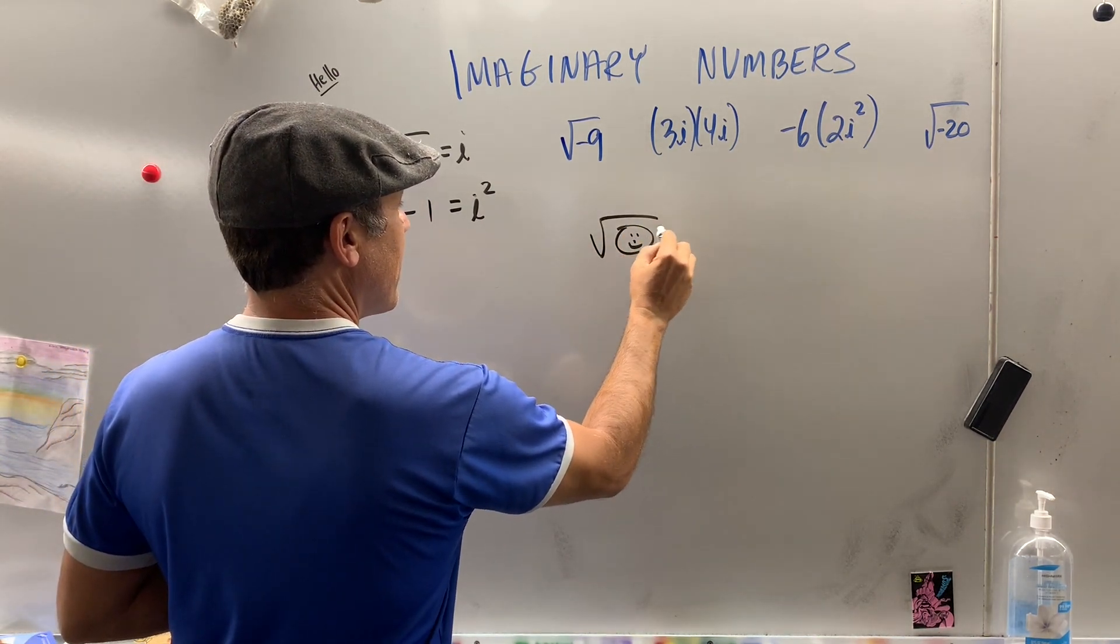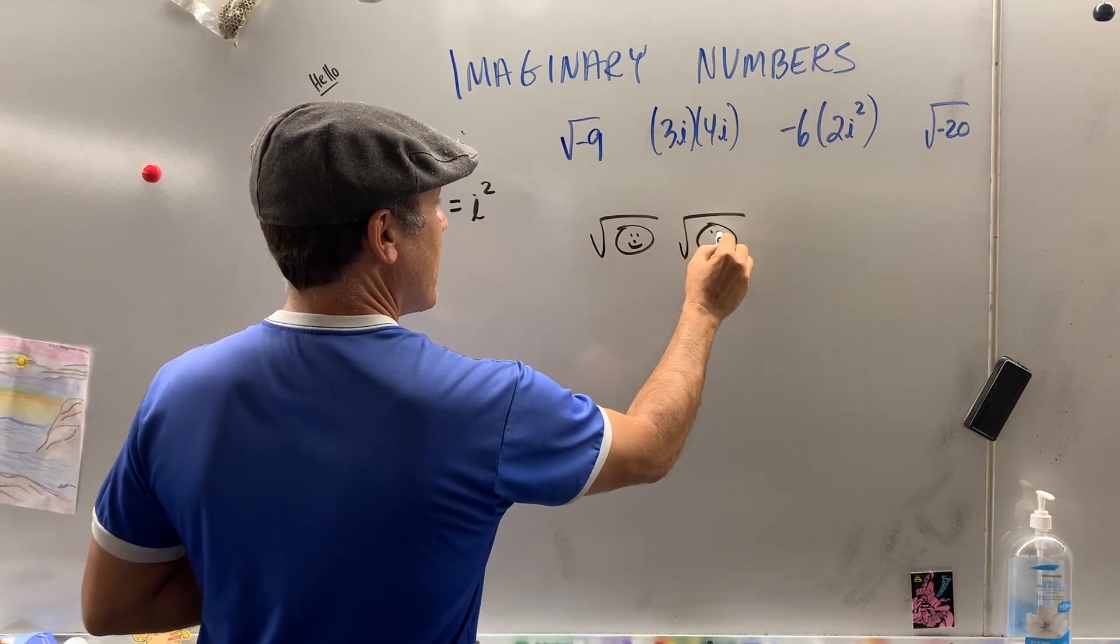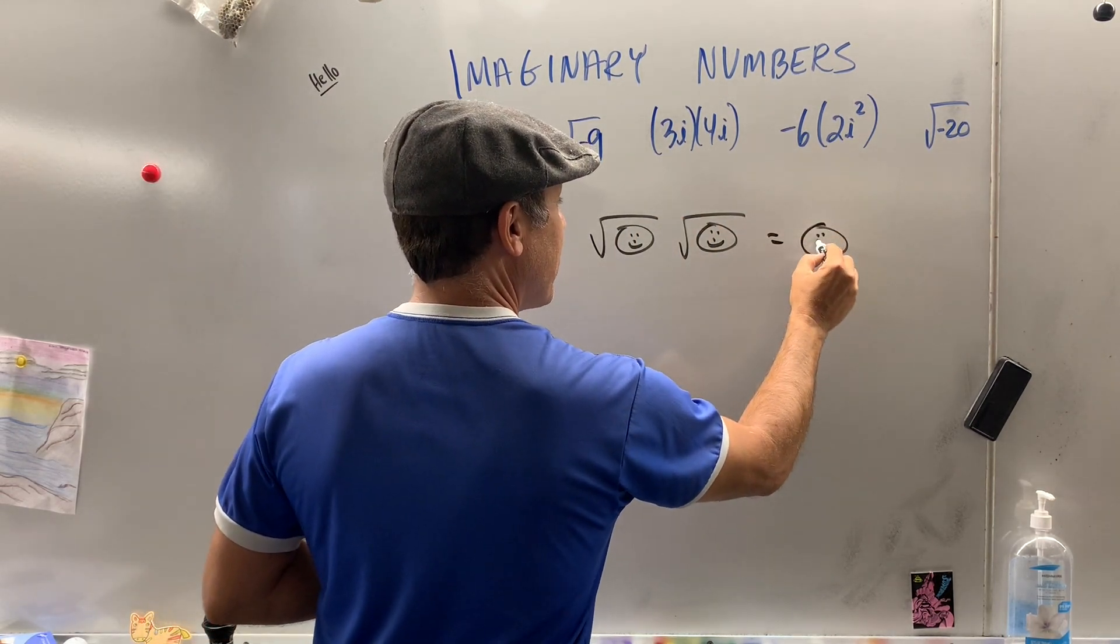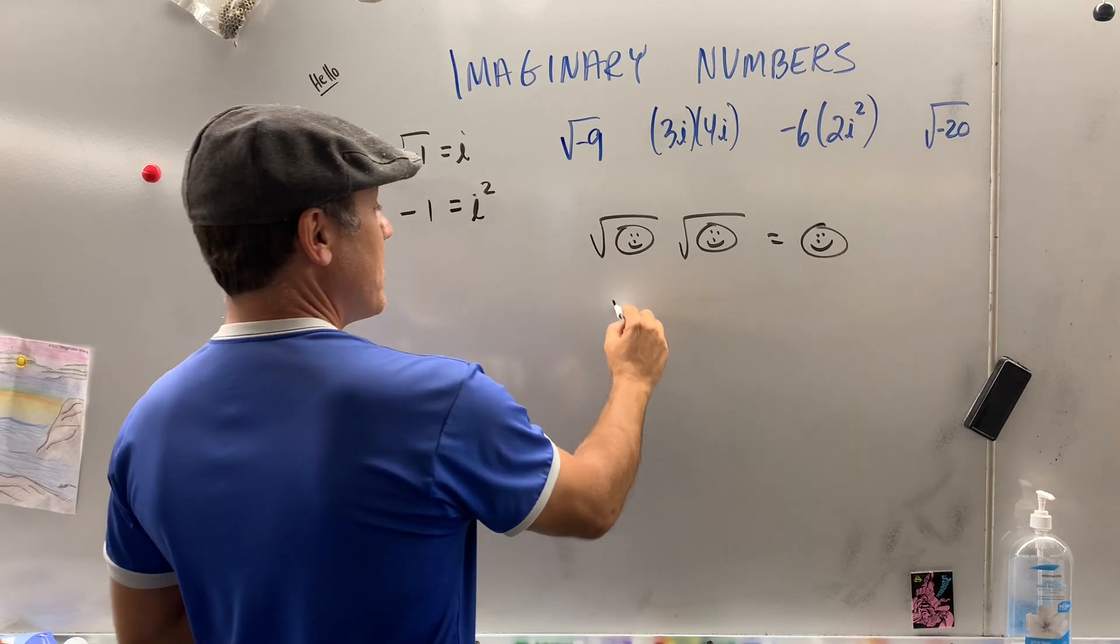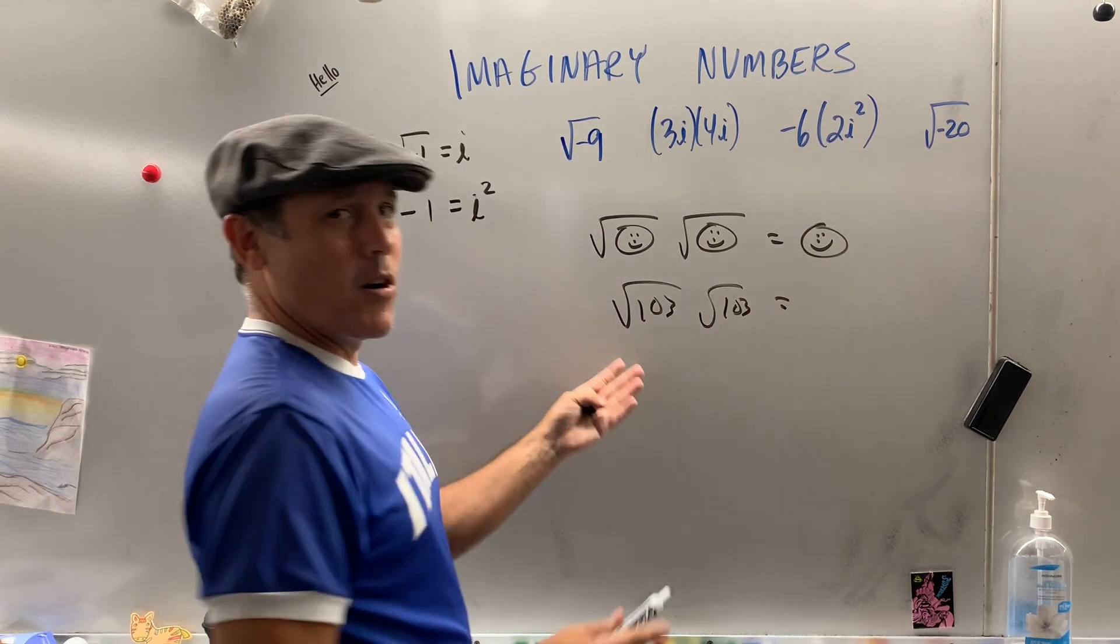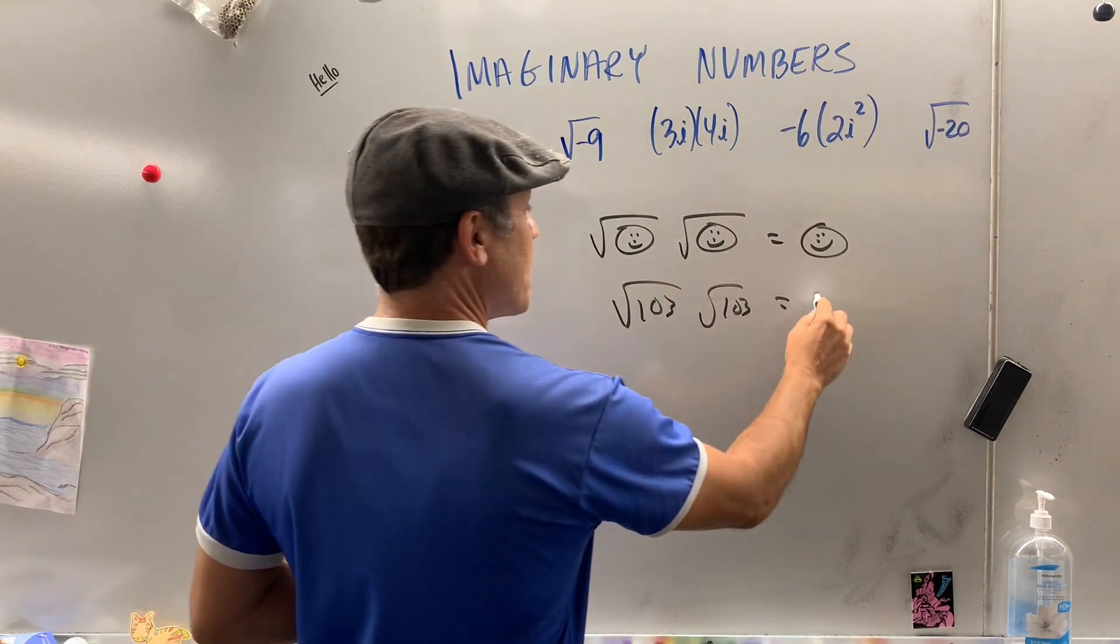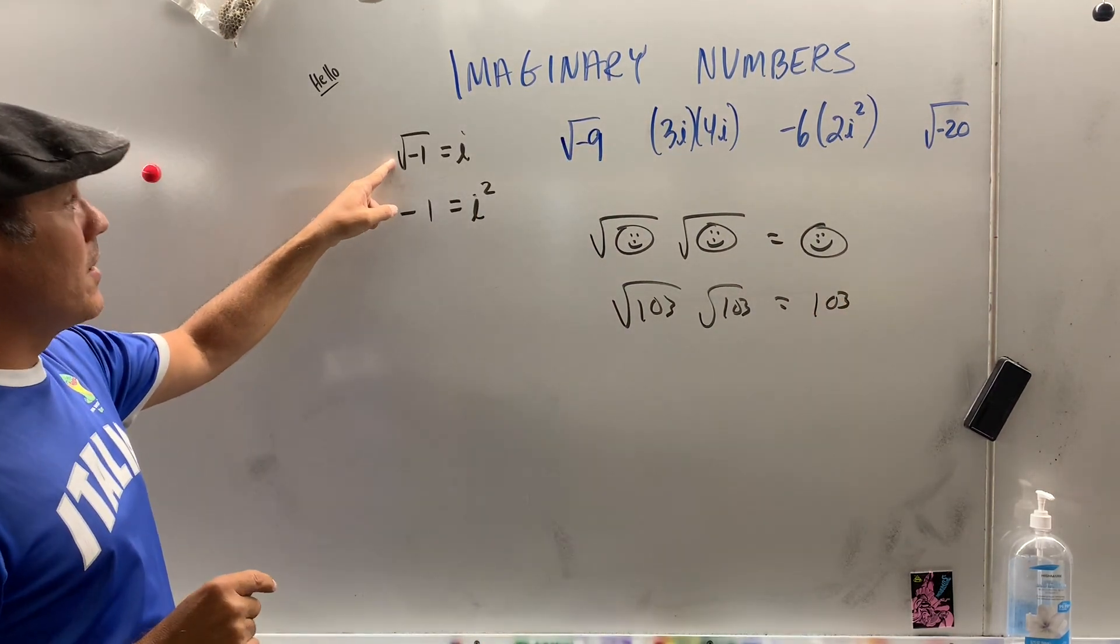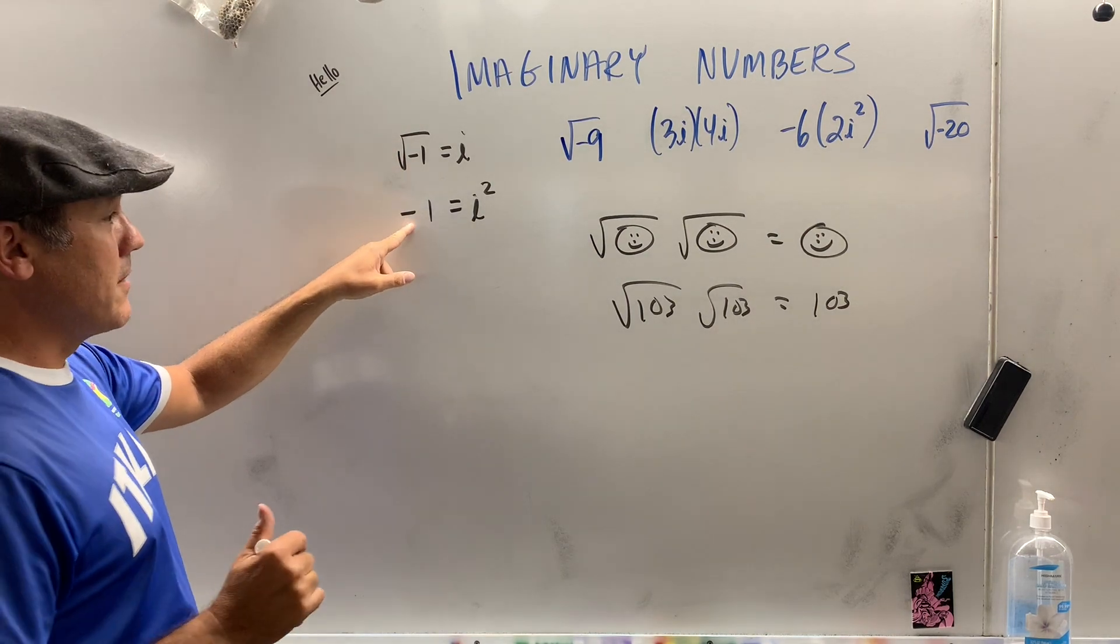The square root of a happy face times the square root of a happy face is a happy face. In other words, the square root of 103 times the square root of 103 - you don't need to multiply 103 times 103, it's just 103. That's why the square root of negative 1 times the square root of negative 1 is negative 1.